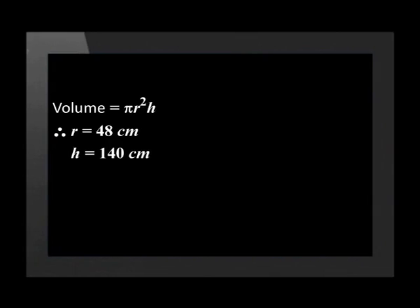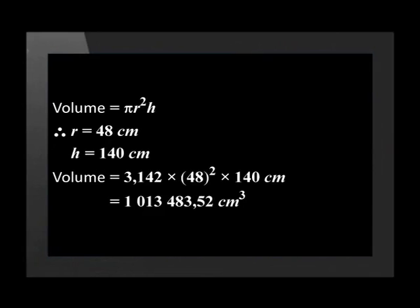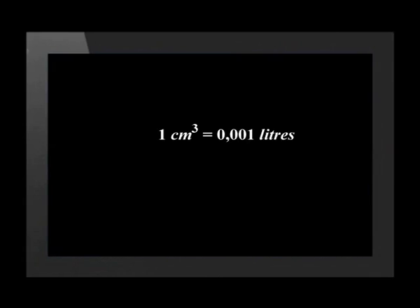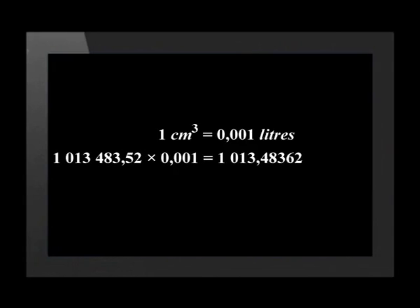Substituting these values, we get 3.142 × 48² × 140. Putting these into our calculator gives 1,013,483.52 centimeters cubed. Now let's change this measurement into liters. Remember that 1 cubic centimeter equals 0.001 liters. Multiplying our volume by 0.001 gives roughly 1,013.5 liters, which we round down to 1,013 liters.